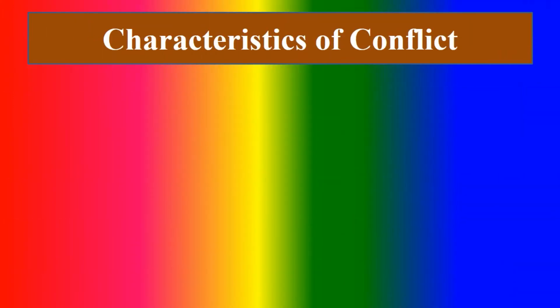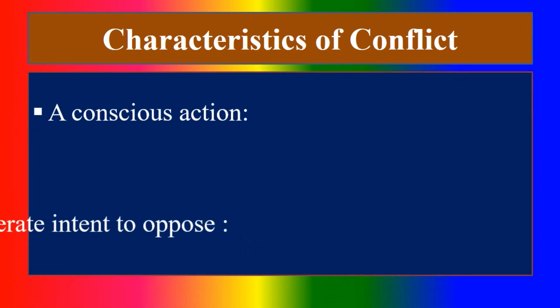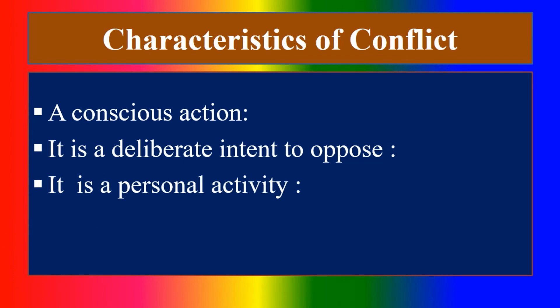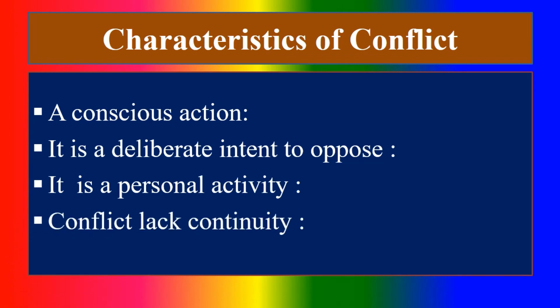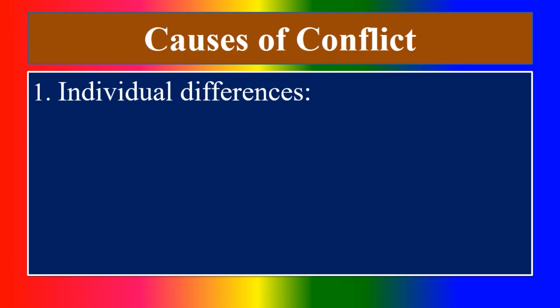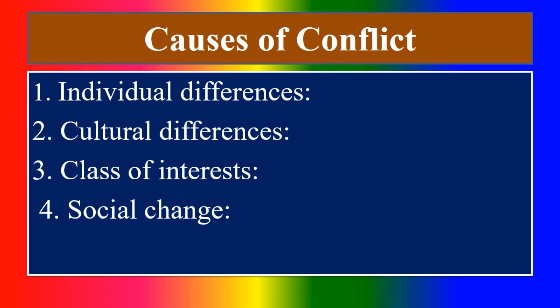What are the characteristics of conflict? First, it is a conscious action. Next, it is a deliberate intent to oppose. It is a personal activity. Conflict lacks continuity. Conflict is universal. What are the causes of conflict? First, individual differences. Second, cultural differences. Third, clash of interest. Fourth, social change.